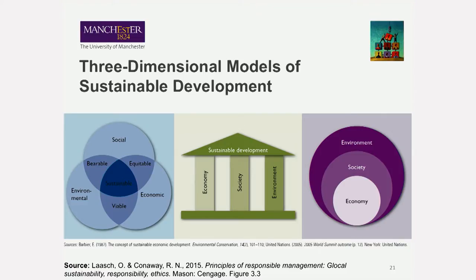The Brundtland definition has been captured in many different ways, and several of these make use of three spheres, three pillars, or similar frameworks. They talk about the fact that sustainable development has an economic dimension, an ecological dimension, and a social dimension.